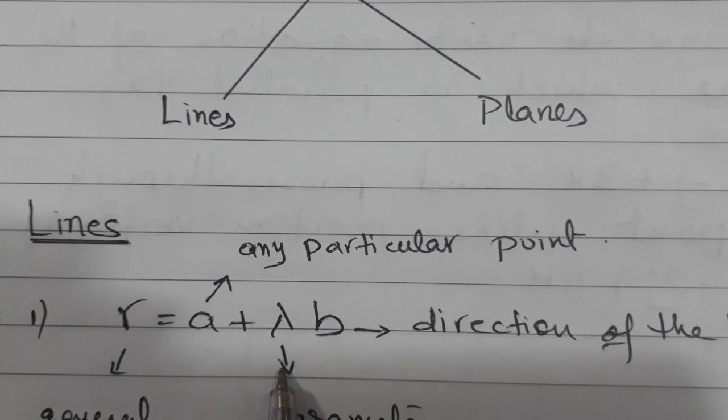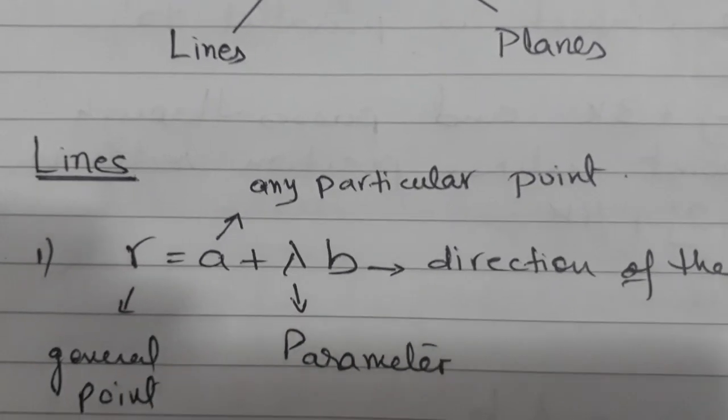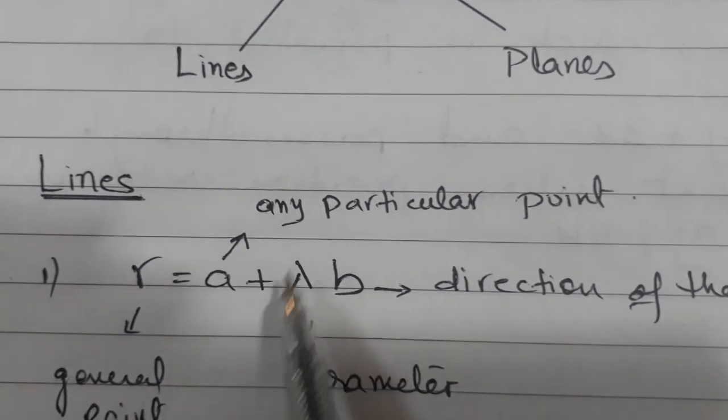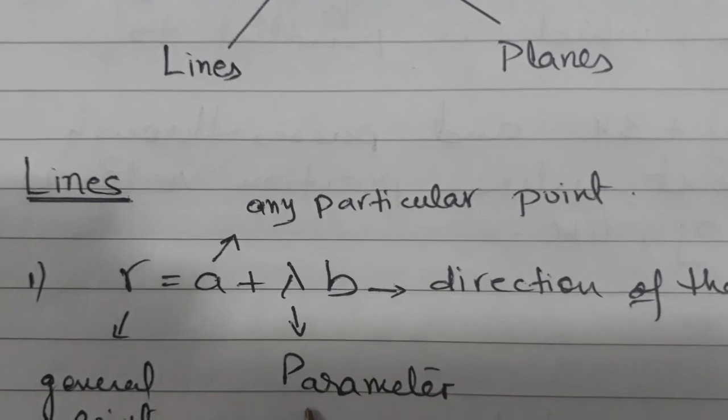How to find the vector equation of the line which is r equals to a plus lambda b. r means any general point on the line, a is any particular point on the line,